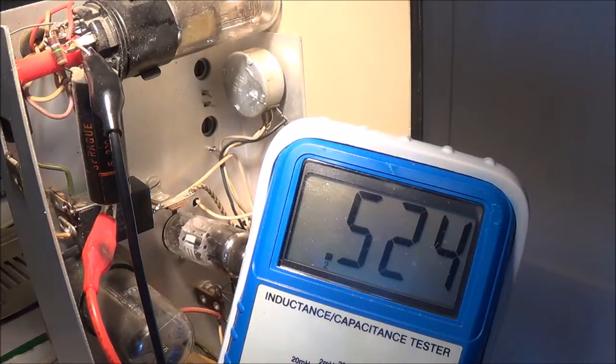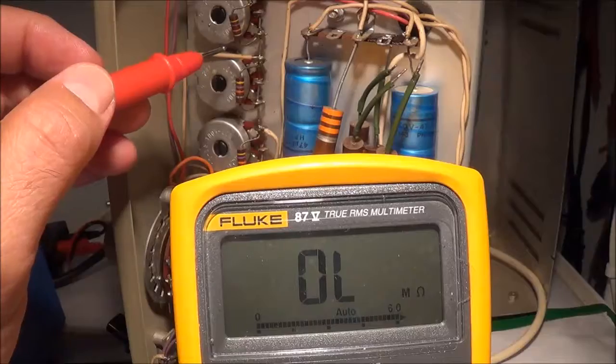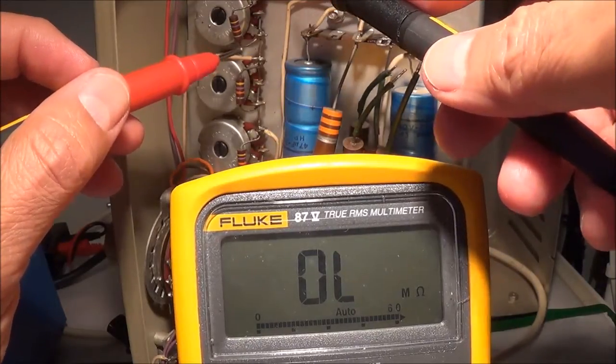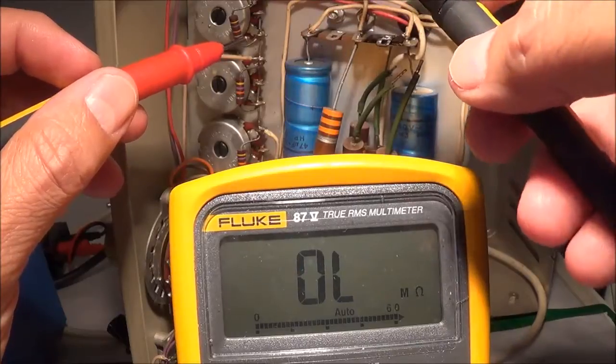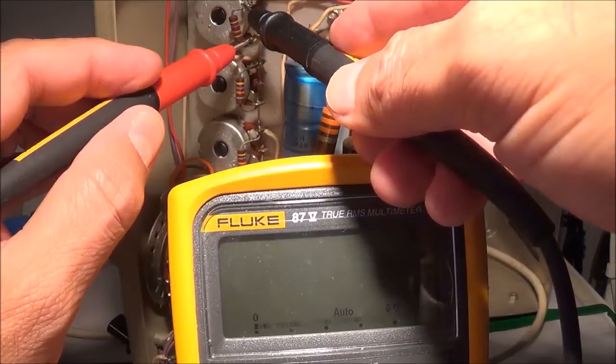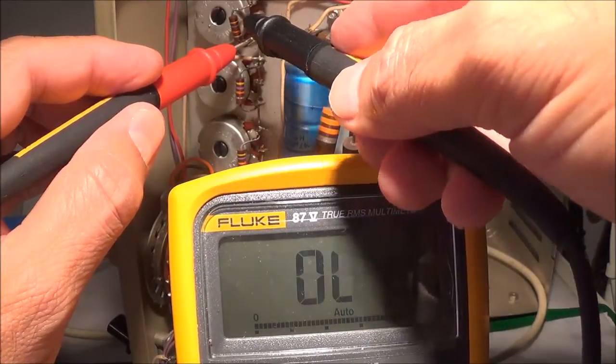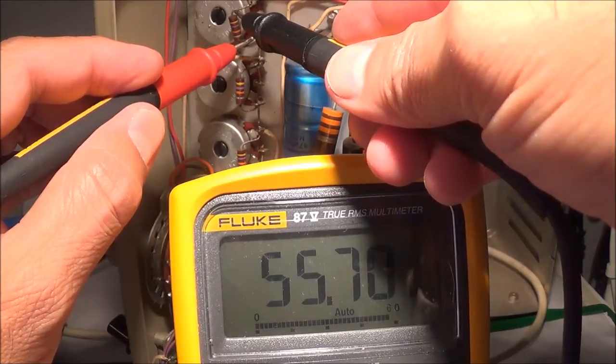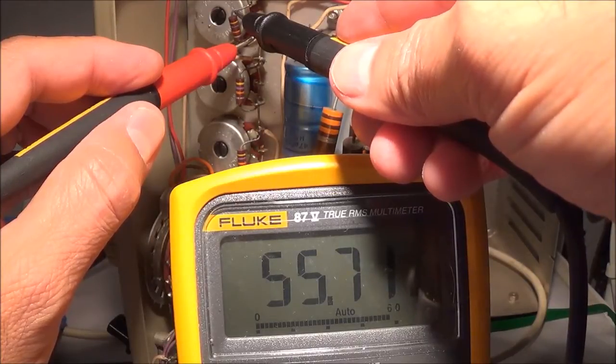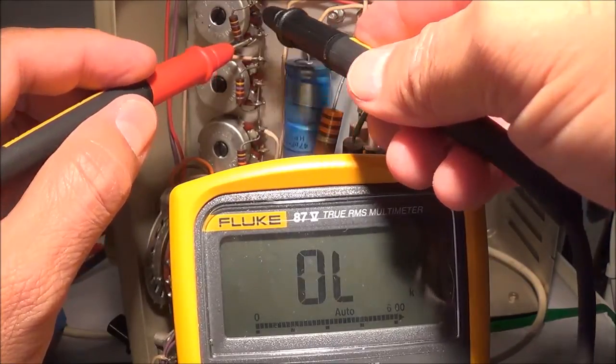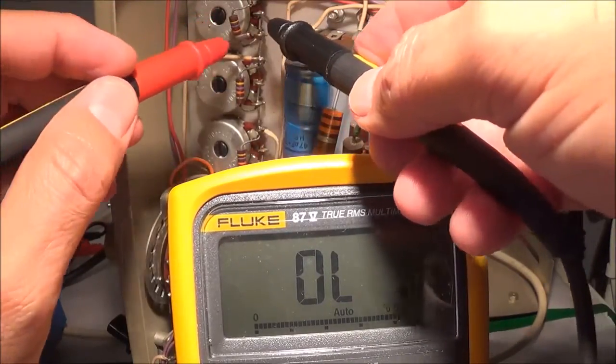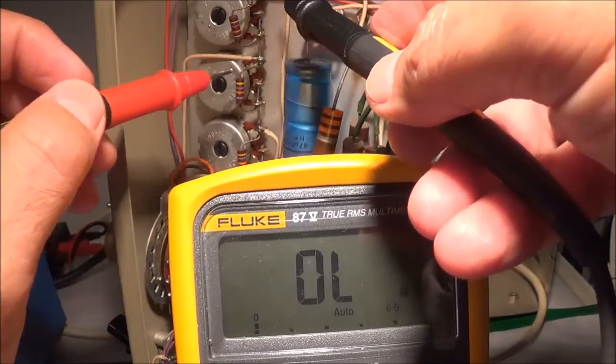Just as an example, I'm in the process of measuring resistors and I already found a bunch that are out of tolerance. Here, for example, this is supposed to be like a 47k resistor. Let me get better contact - it's showing 55.7k or 55,700 ohms. So this is a 10% resistor and it's way out of tolerance. I'm not even gonna bother checking these, I'm just gonna go ahead and replace them.